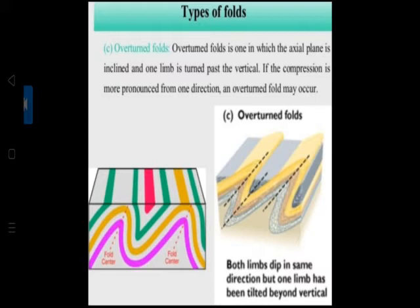Overturned folds - the axial plane is inclined and one limb is turned past the vertical. If compression is more pronounced from one direction, an overturned fold may occur. In your textbook page 4, two characteristics are given: one limb lies above the other limb, and the limbs slope unequally in the same direction.